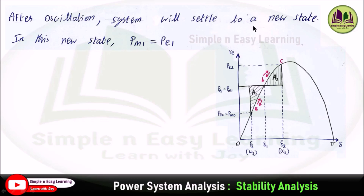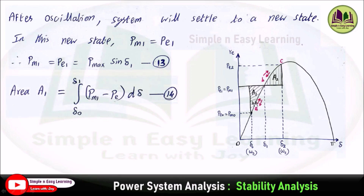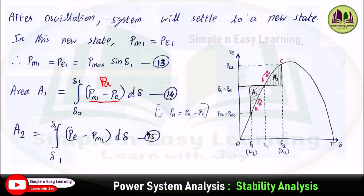After oscillation, the system settles to a new state at point B where Pe = Pm1 = Pmax·sin(delta-1), the corresponding torque angle being delta-1 — equation 13. For area 1, delta varies from delta-0 to delta-1 (accelerating area), so we integrate the accelerating power Pa = Pm1 - Pe over that range — equation 14. For area 2, delta varies from delta-1 to delta-2 (decelerating area), and Pa = Pe - Pm1, since electrical power exceeds mechanical power — equation 15.